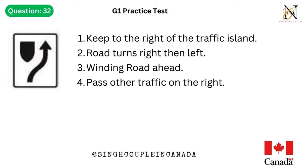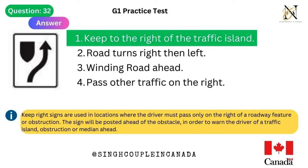Question 32. This traffic sign means: 1. Keep to the right of the traffic island. 2. Road turns right then left. 3. Winding road ahead. 4. Pass other traffic on the right. Answer is 1. Keep to the right of the traffic island. Keep right signs are used in locations where the driver must pass only on the right of a roadway feature or obstruction. The sign will be posted ahead of the obstacle to warn the driver of a traffic island, obstruction or median ahead.